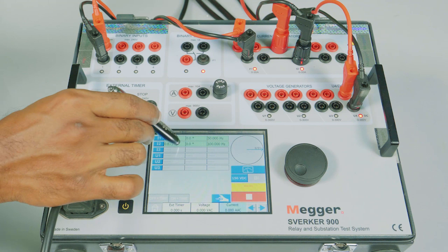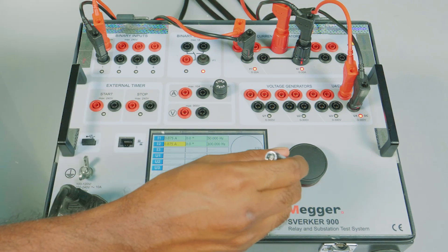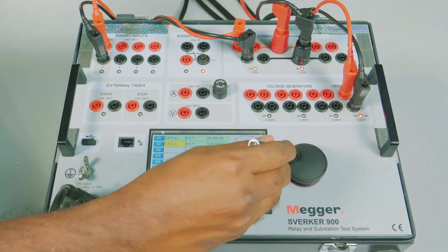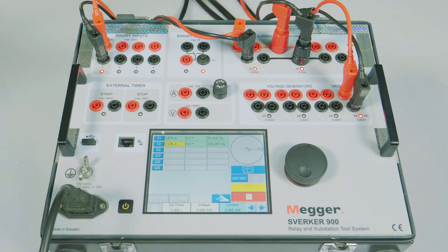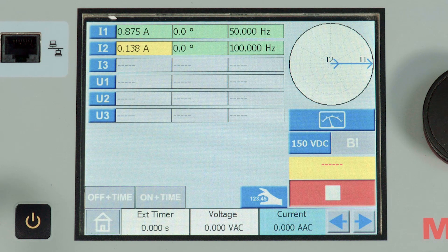Let me choose 100Hz frequency and start reducing it. Approximately, it is 0.138A. This is my CT2 value.